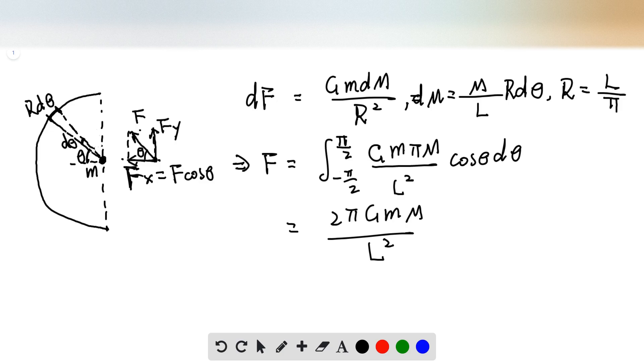So the force coming from this part, the df coming from this part, is going to be equal to the gravitational force G, the mass of the mass point here, and the mass of this tiny part dm, divided by r squared, this distance, right?